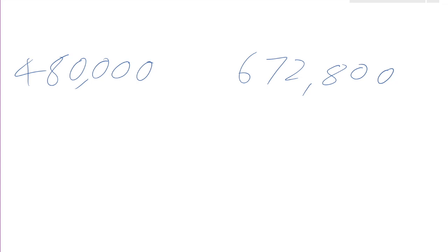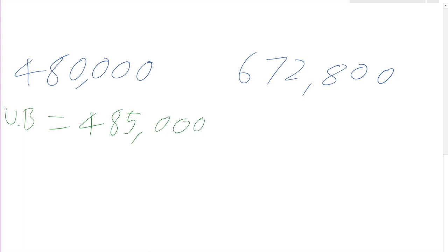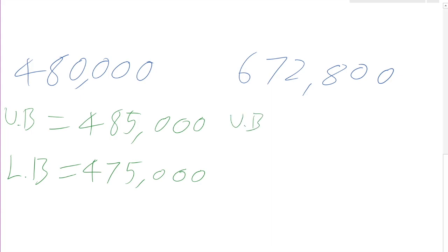Answers: the upper bound of 480,000 — we're assuming to the nearest ten thousand, so we split ten thousand in half to get 5,000. The upper bound is 480,000 + 5,000 = 485,000. Similarly, the lower bound is 480,000 − 5,000 = 475,000. For 672,800, we're assuming to the nearest hundred. Half of 100 is 50, so the upper bound is 672,850 and, to absolutely no one's surprise, the lower bound is 672,750.